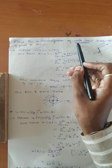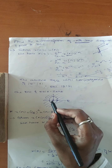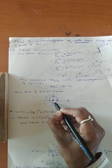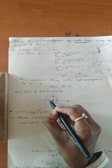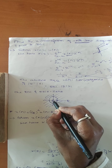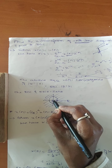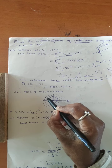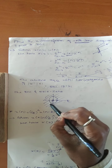For the unit step function, the ROC is outside the unit circle. You draw a circle of radius 1. The pole is at z = 1 and the zero is at z = 0, and the ROC lies outside the unit circle.